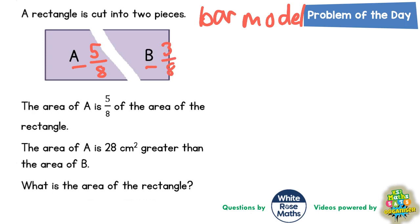The area of A is 28 centimeters squared greater than the area of B. So in other words the difference between the area of A and area of B is 28 centimeters squared.